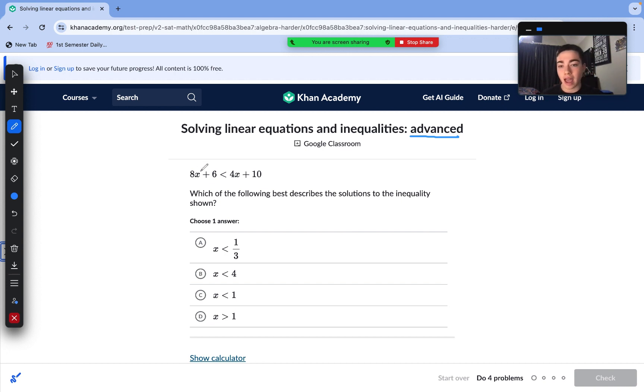Our inequality here is 8x plus 6 is less than 4x plus 10. We need to have one variable in order to isolate it. I like to move over the lesser variable coefficient value, so I would subtract 4x from both sides to start off. Just remember, we need to combine like terms. X terms can only subtract from x terms. That 4x cannot combine with that 6, it can only combine with the 8x. So we do 8x minus 4x and that is 4x. So we have 4x plus 6 is less than 10.